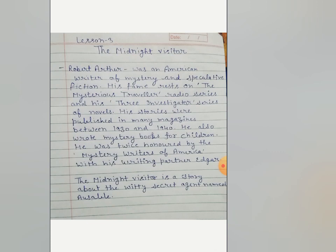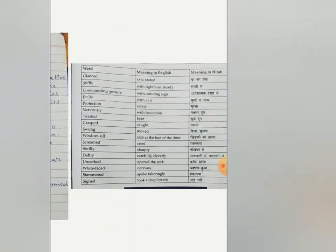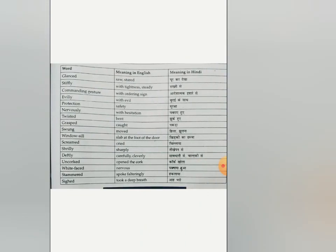The Midnight Visitor is a story about the witty secret agent named Oswell. Our second character, Fowler, is disappointed because Oswell does not seem witty or cunning to him. Now let us start our lesson. There are some word meanings — students, please learn them and you can write them down as well.